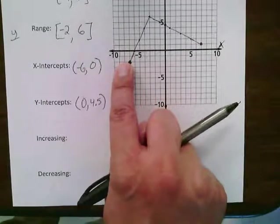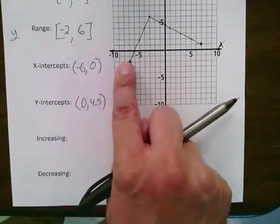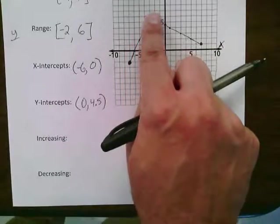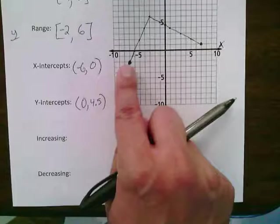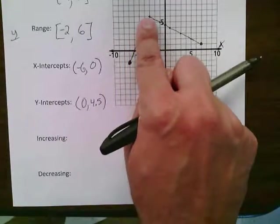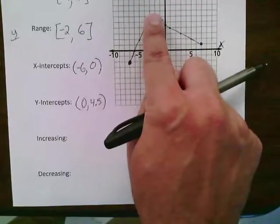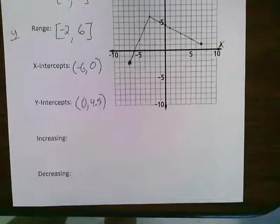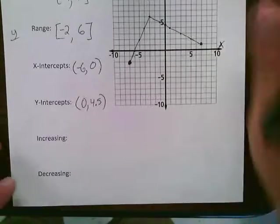If I start on the leftmost point on my graph and I just start tracing it, notice my finger goes up and then it starts coming down. In other words, I am increasing, going up, and then at some point I start decreasing and coming down. So all we have to do is we just have to write the interval in which we are increasing and the interval we are decreasing.